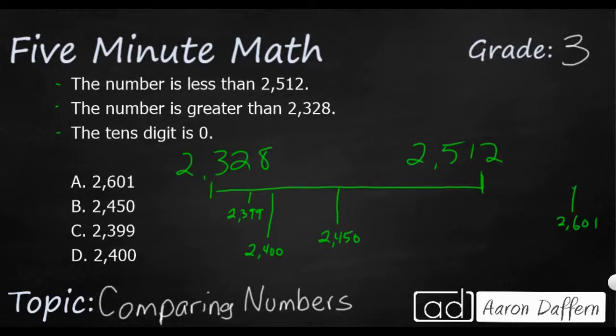One way to think about our answer is to draw a little number line here. It says the number is going to be less than 2,512, so it's going to be on this side of it. But it also needs to be greater than 2,328, so it needs to go on the right side of that. So it needs to fall between these two lines. And right now I can eliminate 2,601 because it is too large. But you see our other three fall within the range.